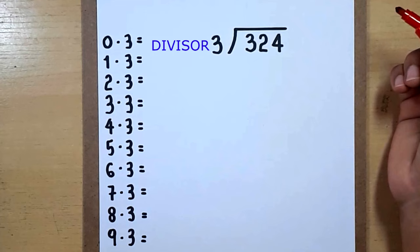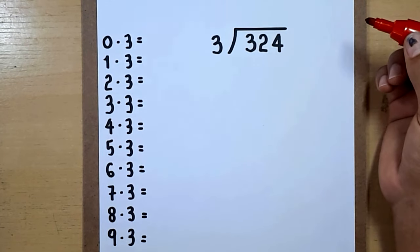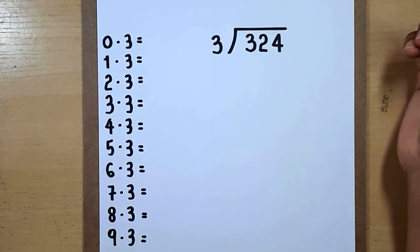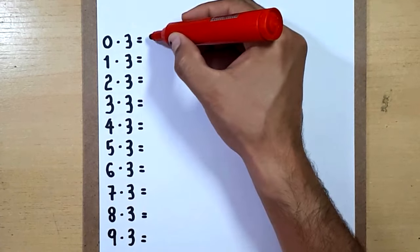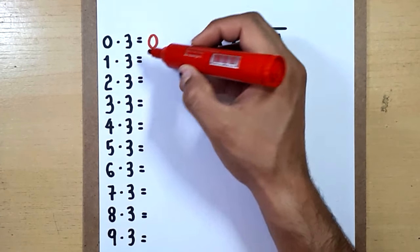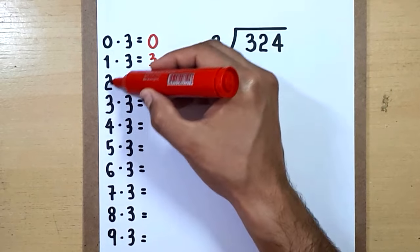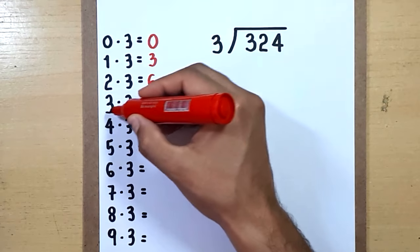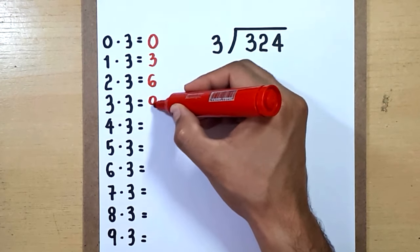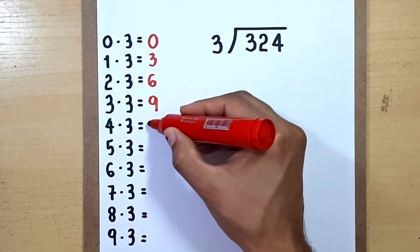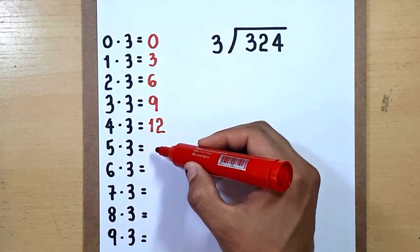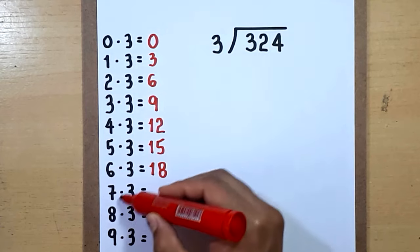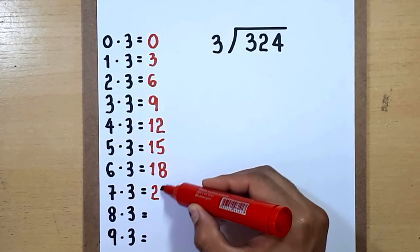Three is our divisor. Here I like to remember the multiplication table of our divisor. Let's remember that 0 times 3 equals 0, 1 times 3 equals 3, 2 times 3 is 6, 3 times 3 is 9, 4 times 3 is 12, 5 times 3 is 15.